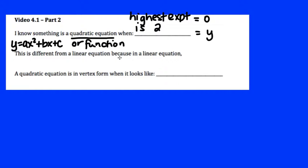And this is different from a linear equation, because in a linear equation, the highest exponent is a 1. That's how they differ, and you're going to really want to know the difference, because there's different ways to solve them.